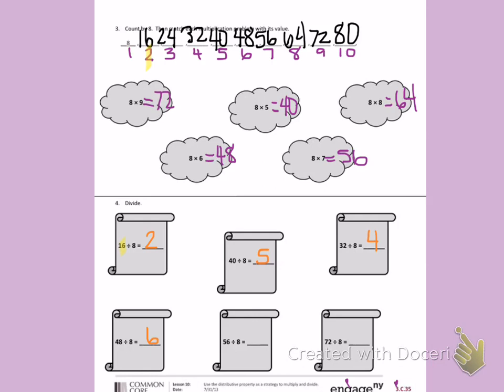56 divided by 8, I have to count 7 times by 8 to get to 56. 72 divided by 8, I have to count 9 times to get to 72 when I'm counting by 8s.